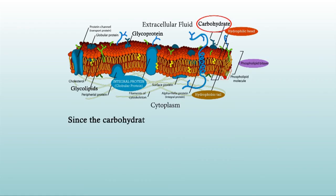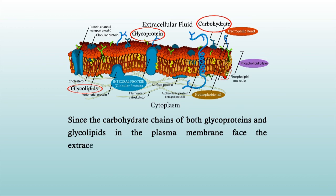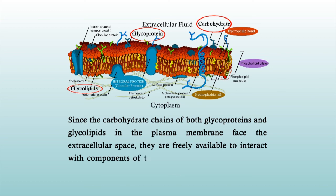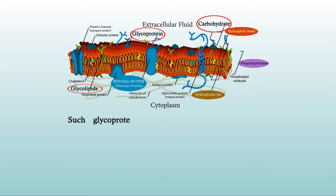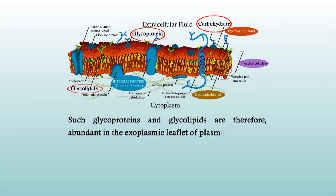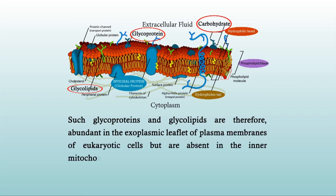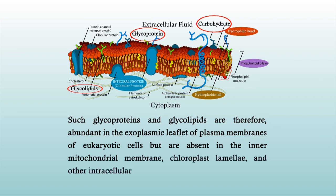Since the carbohydrate chains of both glycoproteins and glycolipids in the plasma membrane face the extracellular space, they are freely available to interact with components of the extracellular matrix and other molecules such as lectins, growth factors, and antibodies. Such glycoproteins and glycolipids are therefore abundant in the exoplasmic leaflet of plasma membranes of eukaryotic cells, but are absent in the inner mitochondrial membrane, chloroplast lamella, and other intracellular membranes.